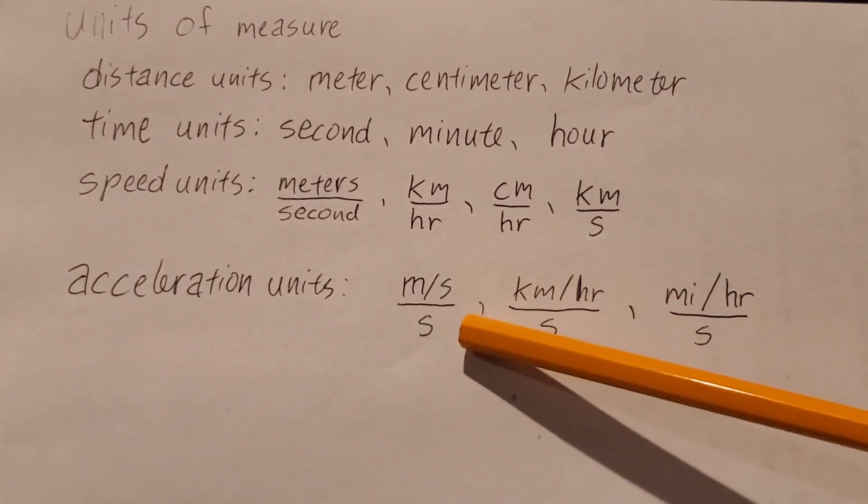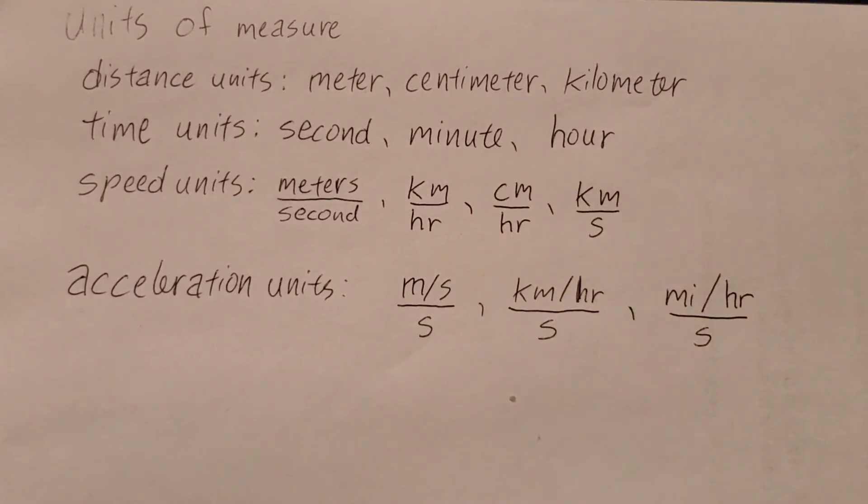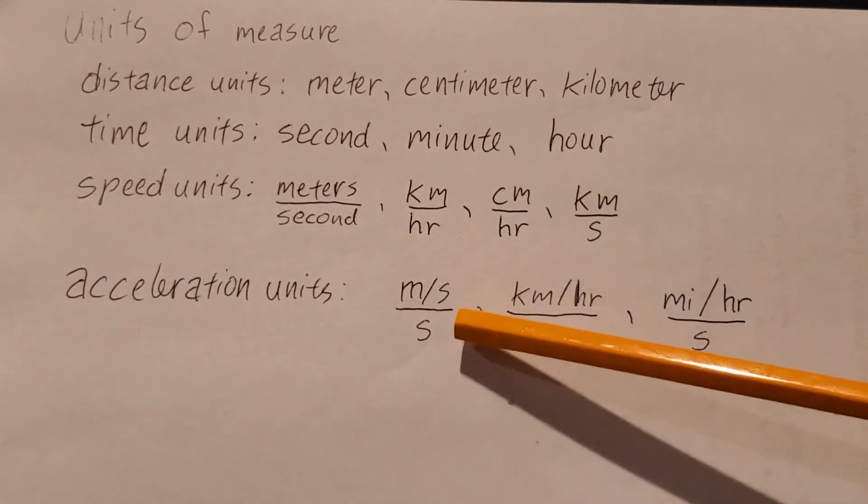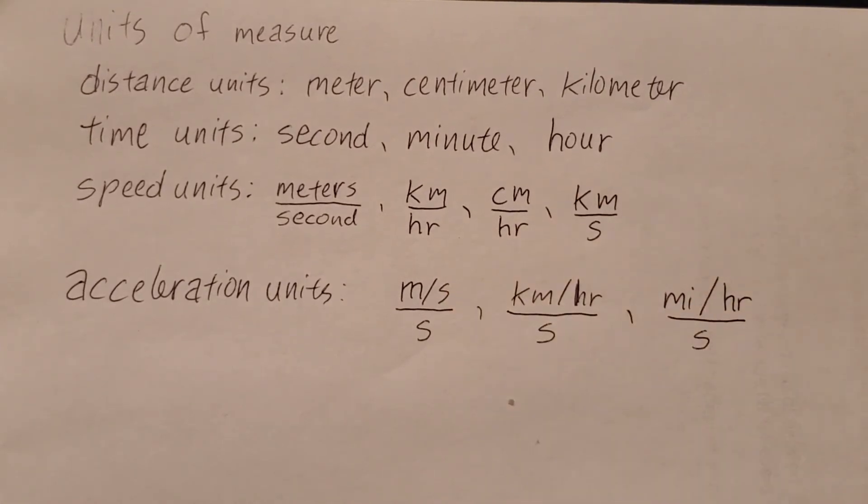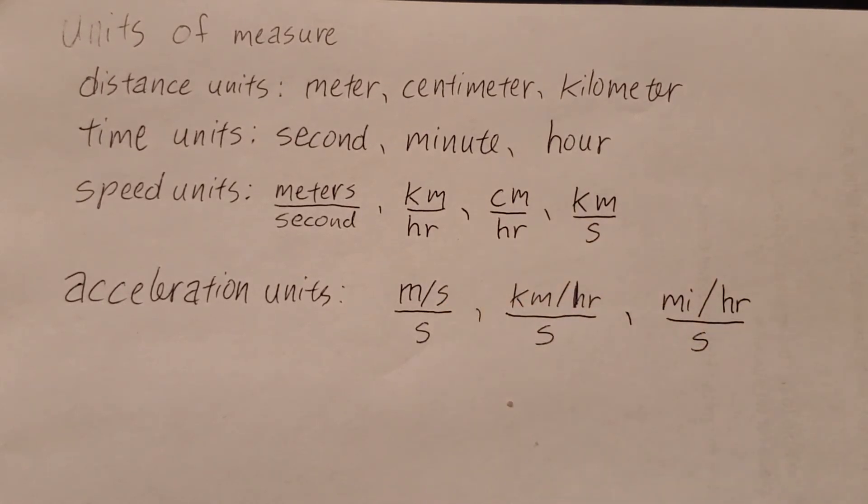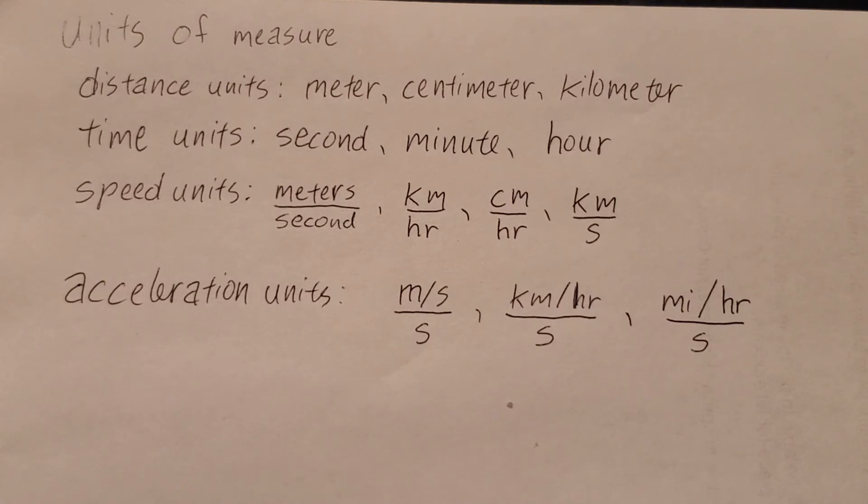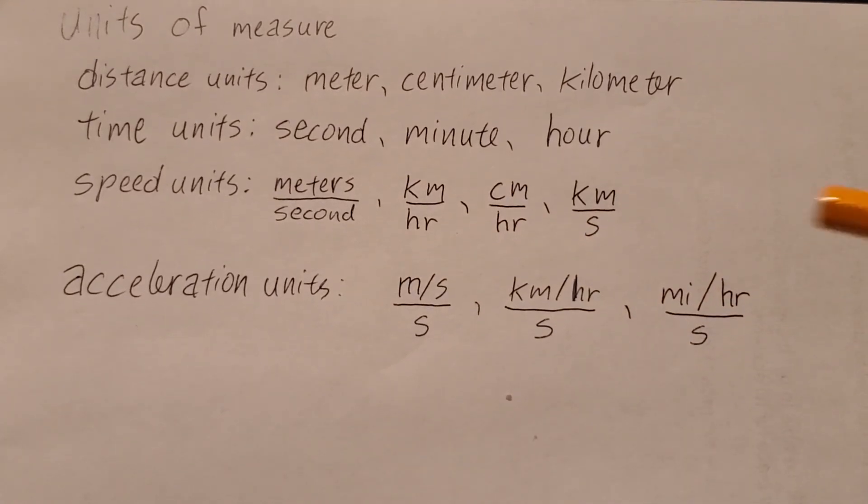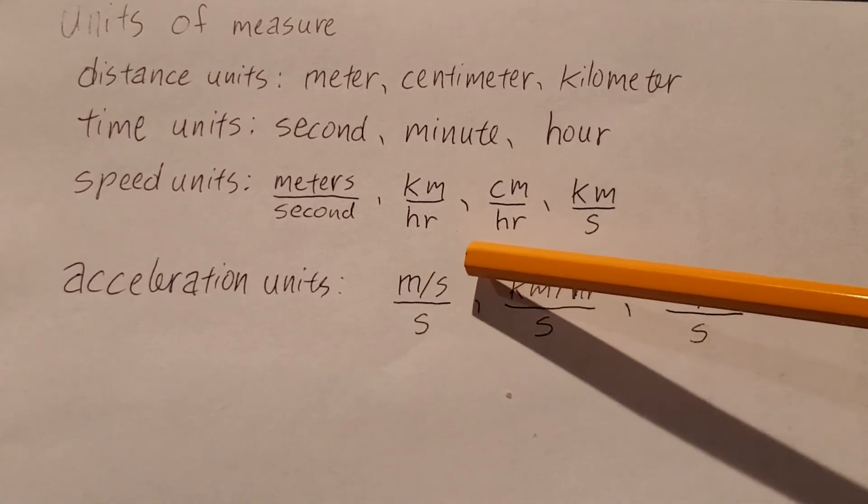Let's say you have an acceleration of one meter per second per second. So you're not moving. And then after one second, you're moving at one meter per second. Then another second later, and you're moving at two meters per second. Each second that goes by, your speed changes by a meter per second. So it's meters per second per second.